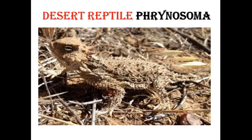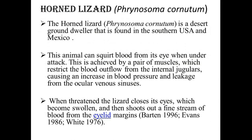The first animal showing adaptation to the desert ecosystem is Phrynosoma, belonging to phylum Chordata, class Reptilia. The horned lizard Phrynosoma cornutum develops adaptations to the desert environment and is restricted to the southern USA and Mexico. This animal can squeeze blood from its eyes when under attack. This is achieved by paired muscles that restrict blood flow from the internal jugulars, causing increased blood pressure and leakage from the ocular venous sinuses.